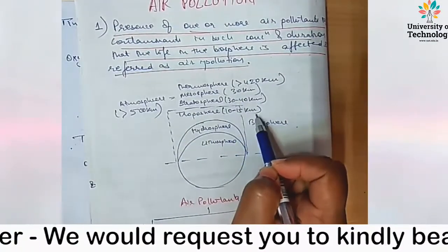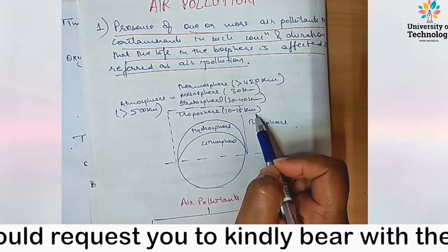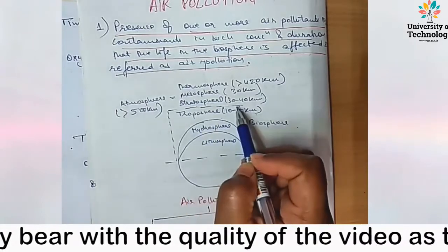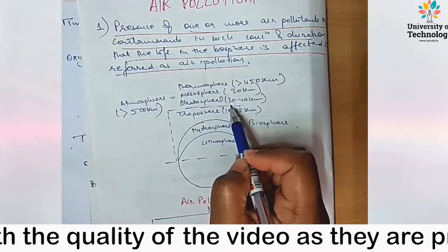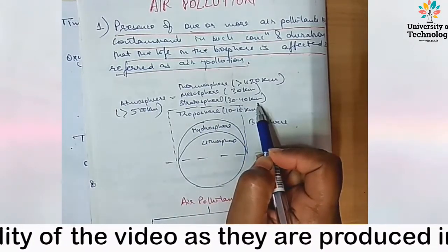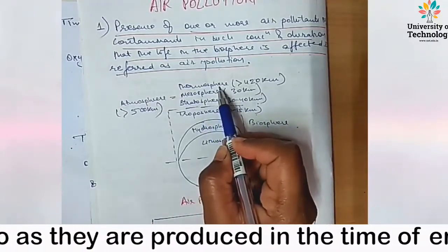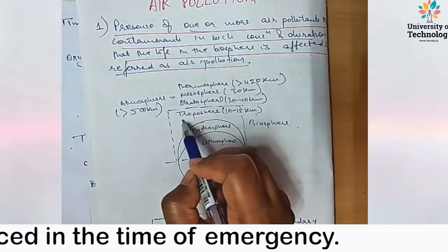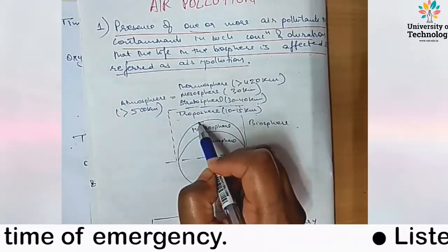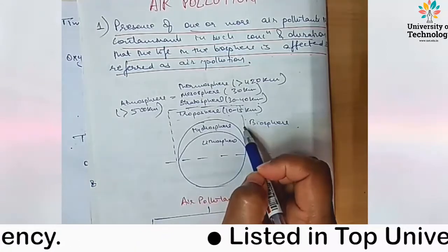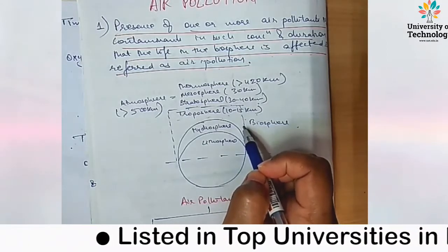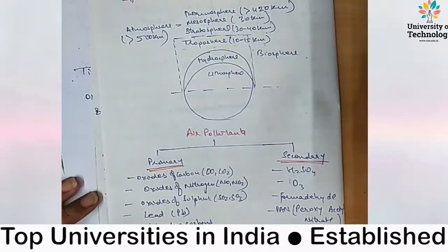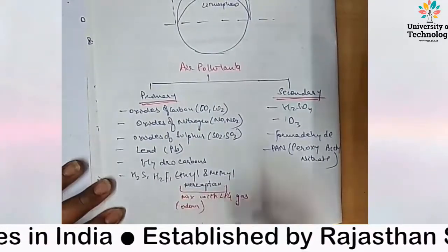The first atmospheric layer is the troposphere, up to 10 to 15 kilometers above the earth's surface. Then the stratosphere, which lies between 30 to 40 kilometers above the earth's surface. Then the mesosphere and thermosphere. We are considering that air pollutants are mostly present up to the troposphere layer, that is up to 15 kilometers above the earth's surface. This is the biosphere.